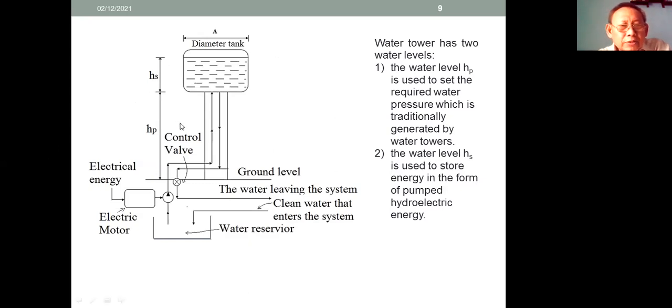You can look at the picture. Water tower has two water levels. One, the water level HP is used to set the required water pressure, which is traditionally generated by water towers. Two, the water level HS is used to store energy in the form of hydroelectric energy.